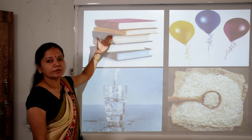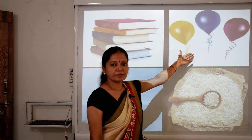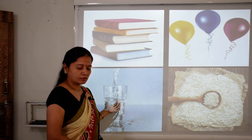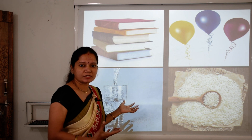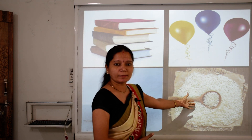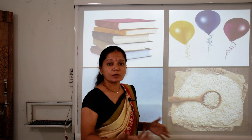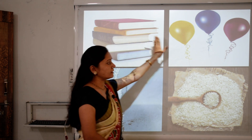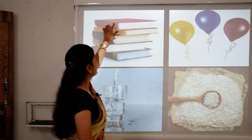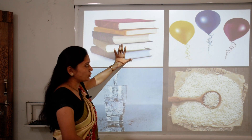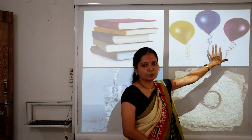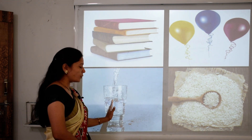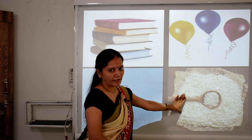We can count the number of books and we can count the number of balloons, but can you count the water in the glass? No, it is impossible to count water in the glass. Can you count the number of rice? No, it is also impossible. So here are 5 books and 3 balloons. We can count books and balloons, but we cannot count water in the glass and the number of rice.